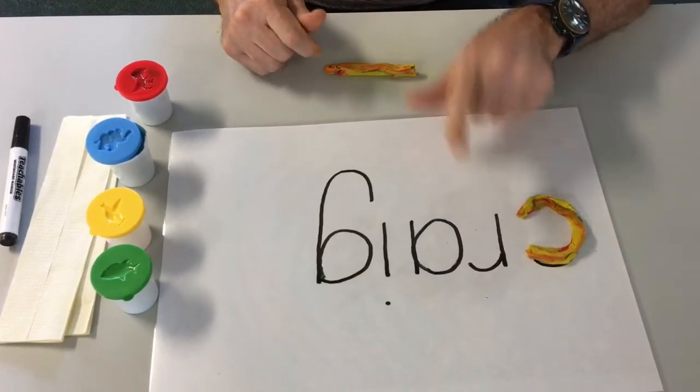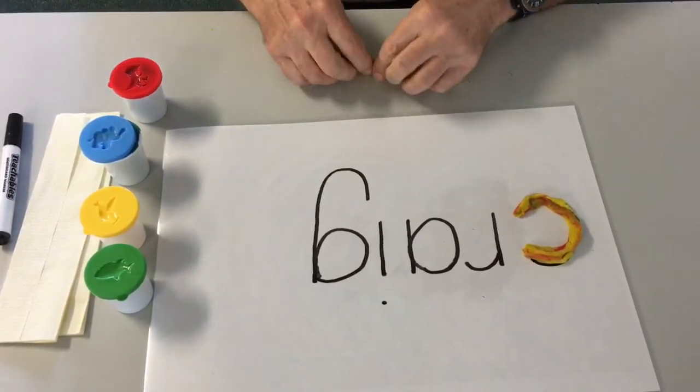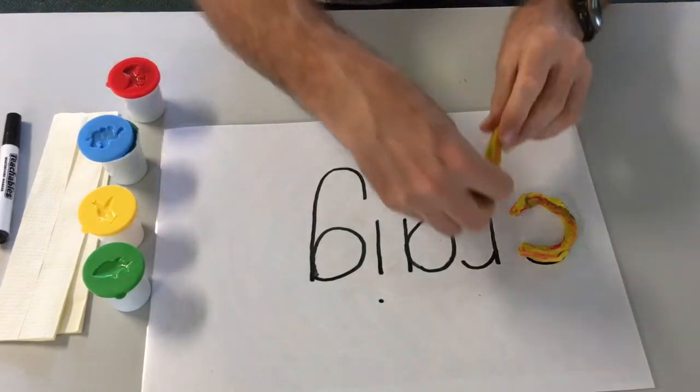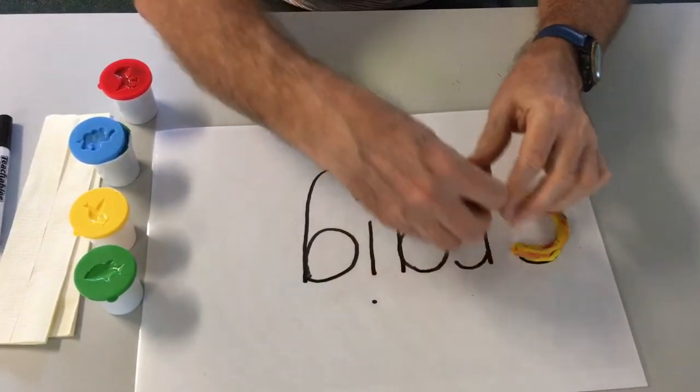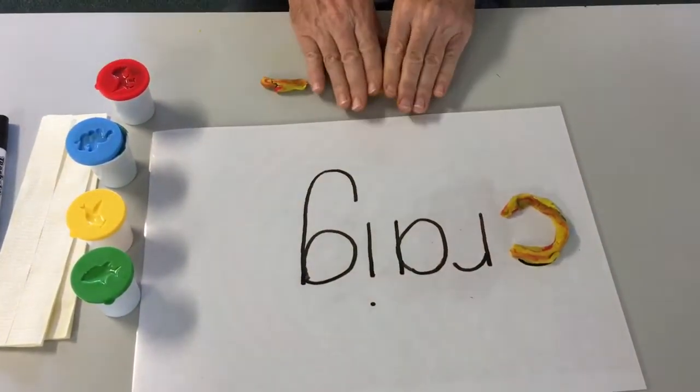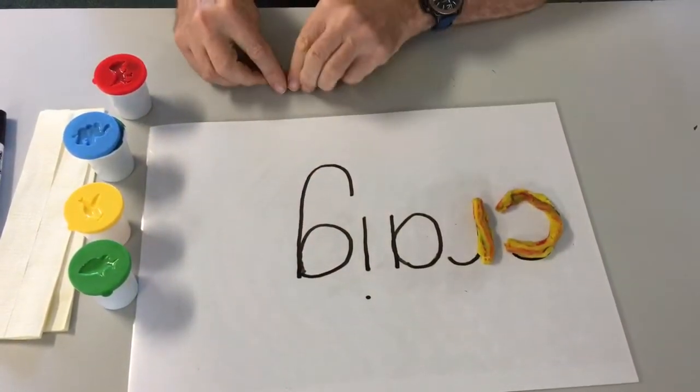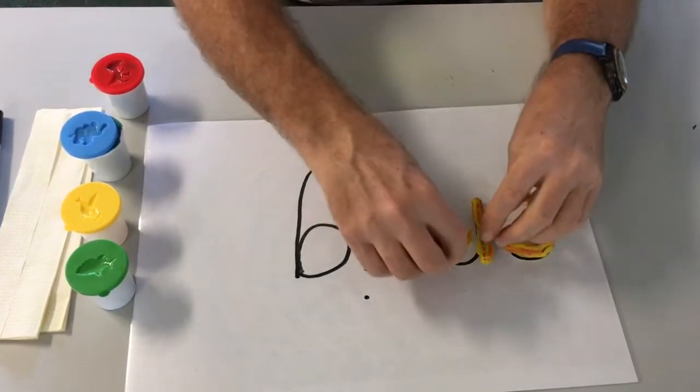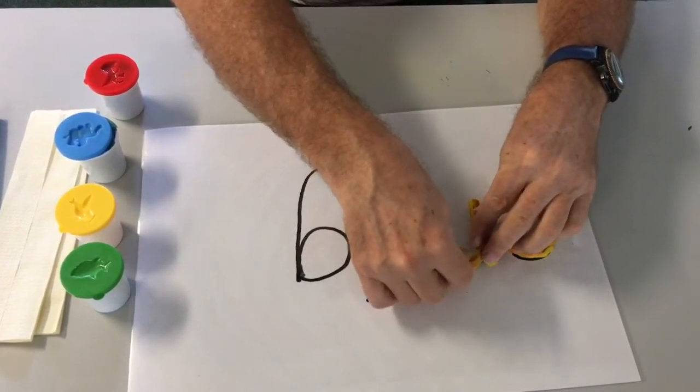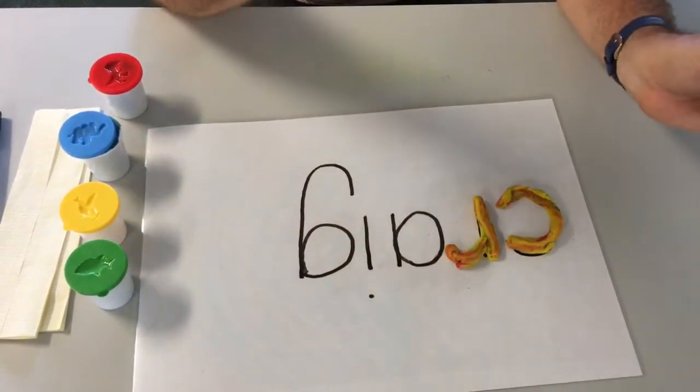Now I'm going to do the letter R, so I'm going to make a long straight bit like that and a little curved bit like that.